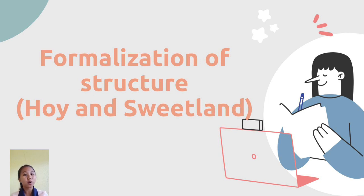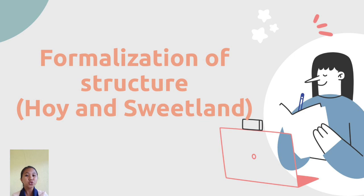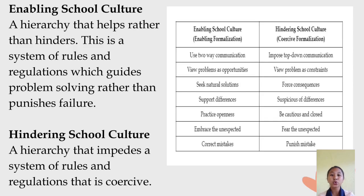We will tackle more about formalization of structure by Hoy and Sweetland in school culture. It is an organizational structure, rules, and regulations defining school life for teachers, students, and administrators. It has two school cultures: enabling and hindering school culture.